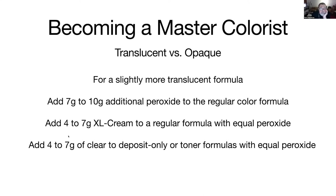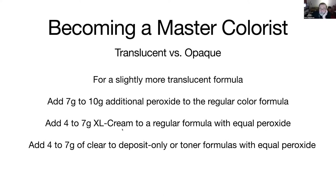Within the same level, I want to add between four and seven grams of a lightening cream — any color without color in it — but one that does not contain a persulfate, because persulfates destroy color molecules. If you add a small amount of XL cream to a formula and maintain equal amounts — for instance, 45 grams of light brown color plus five grams of XL cream, then 60 grams of developer — it would be a slightly lighter version of the color.